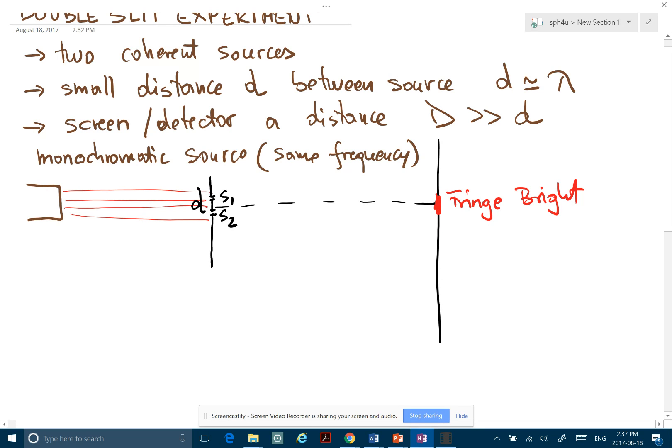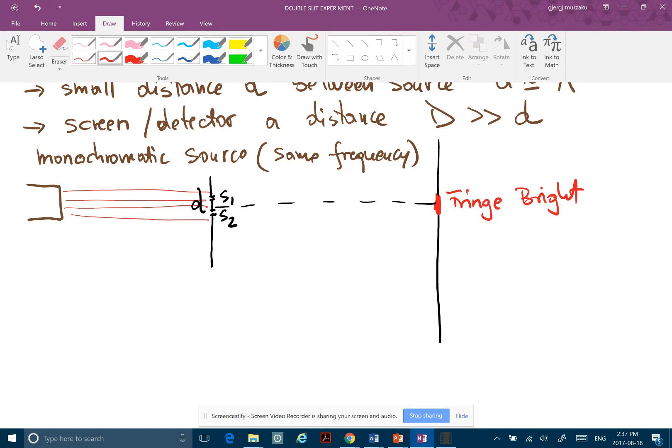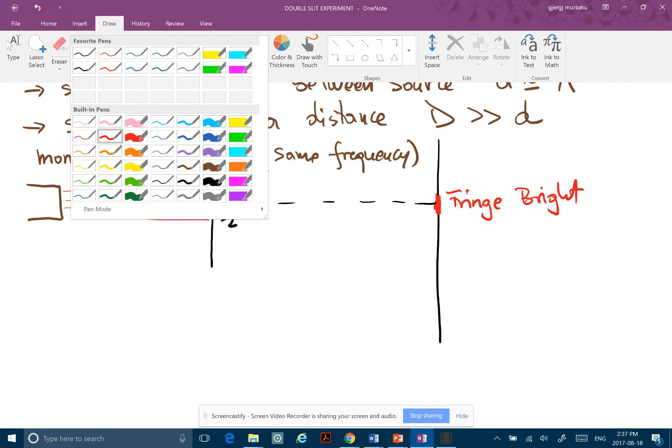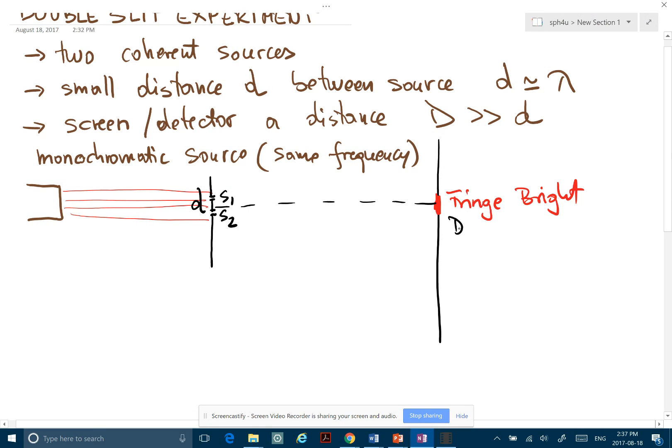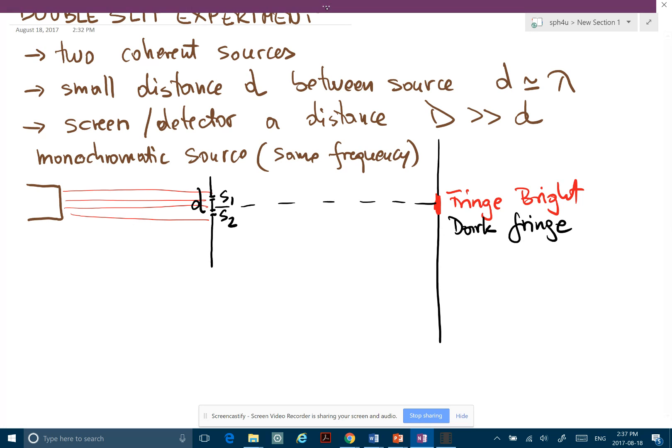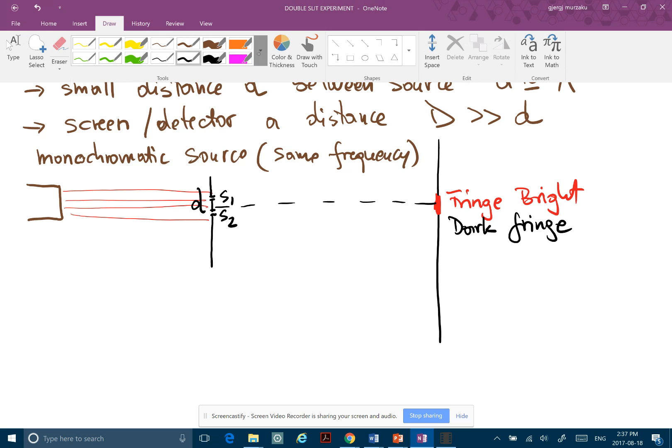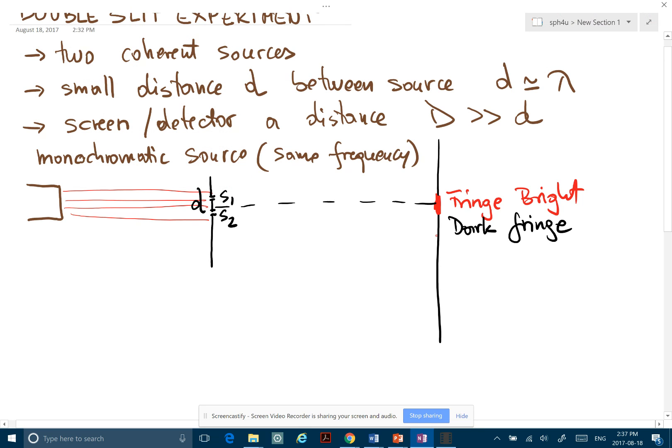And then you get some dark fringes, which means destructive interference, and then they keep on alternating. So if you were to do this experiment, you would see some red fringes on one side, and then of course symmetrical on the other side.